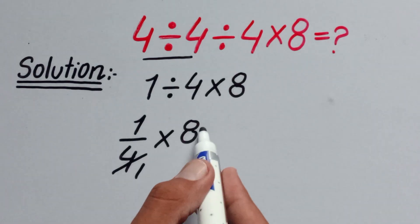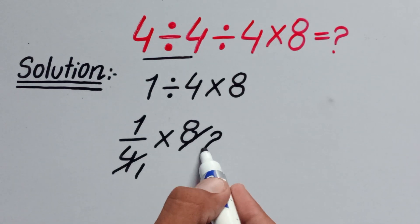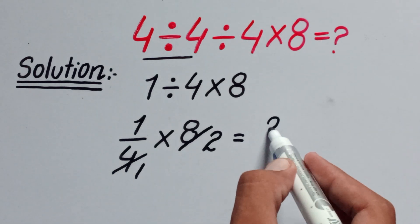4 ones are 4, and 4 twos are 8, so the final answer of this expression is 2.